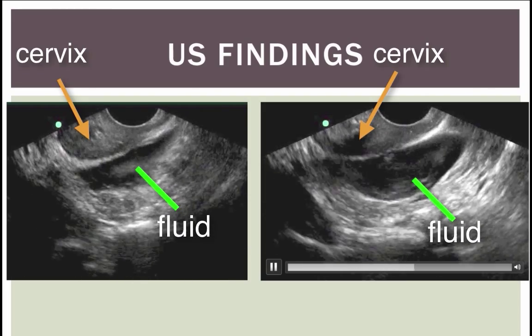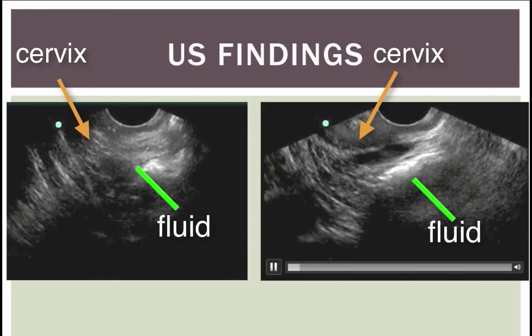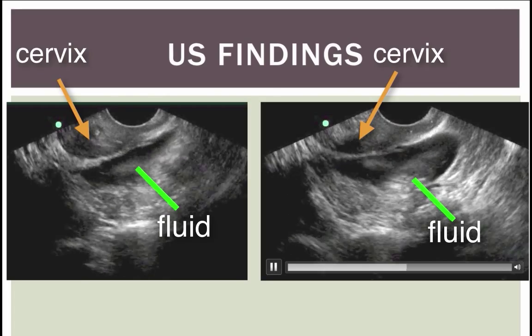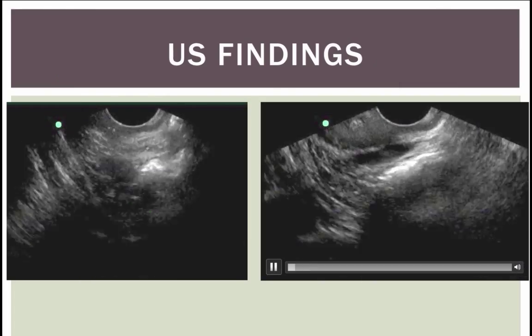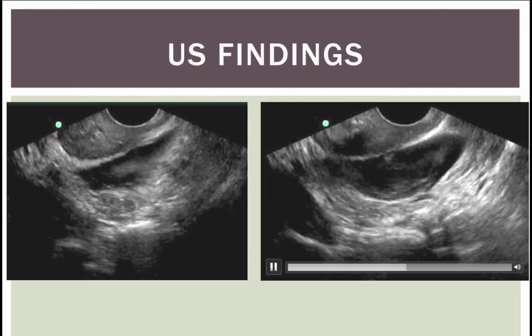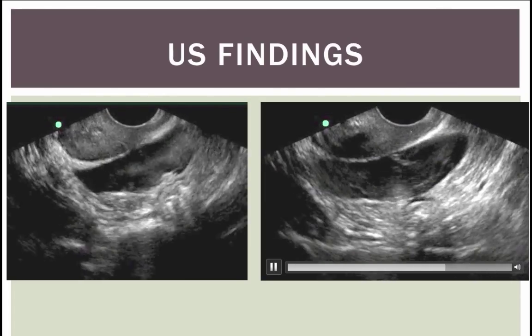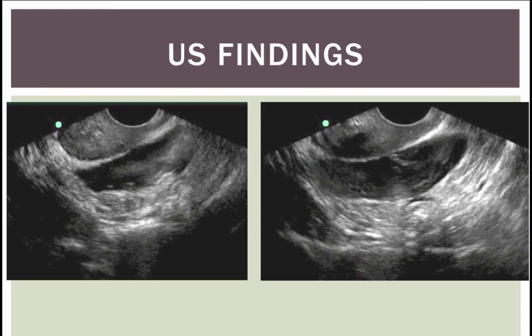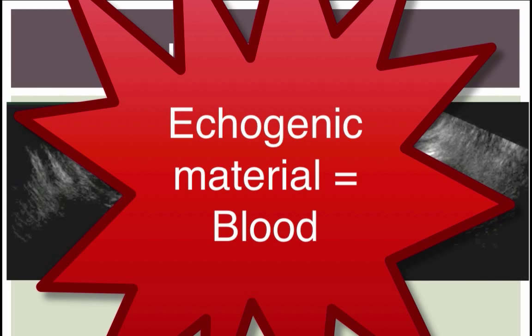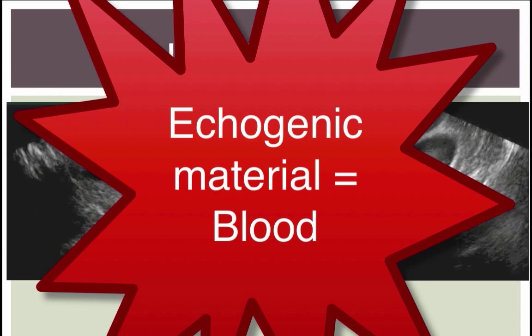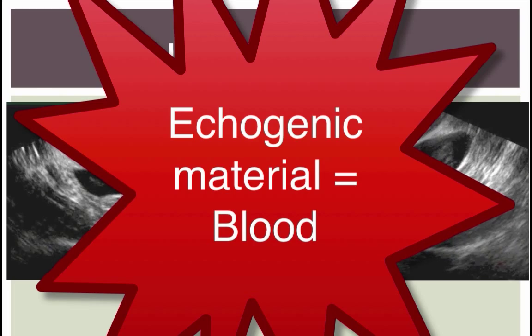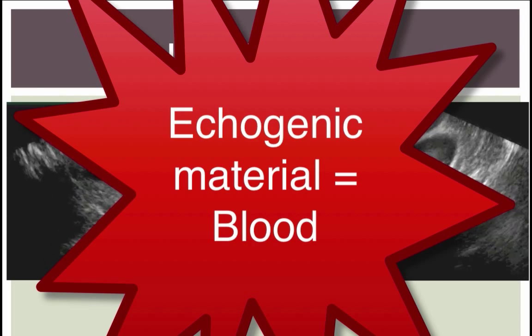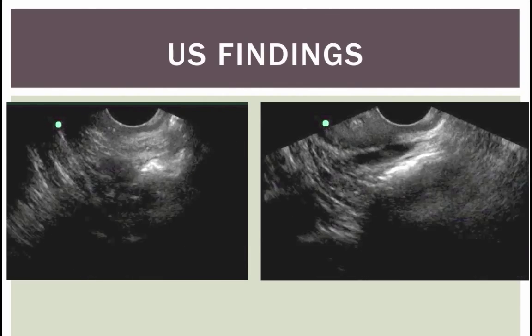We see it also over here - we see gray stuff within that free fluid. So this is not just free fluid, this is complex free fluid. This is blood that is clotted, or pus. But when we're thinking about ectopic, we have to be thinking this is probably blood.